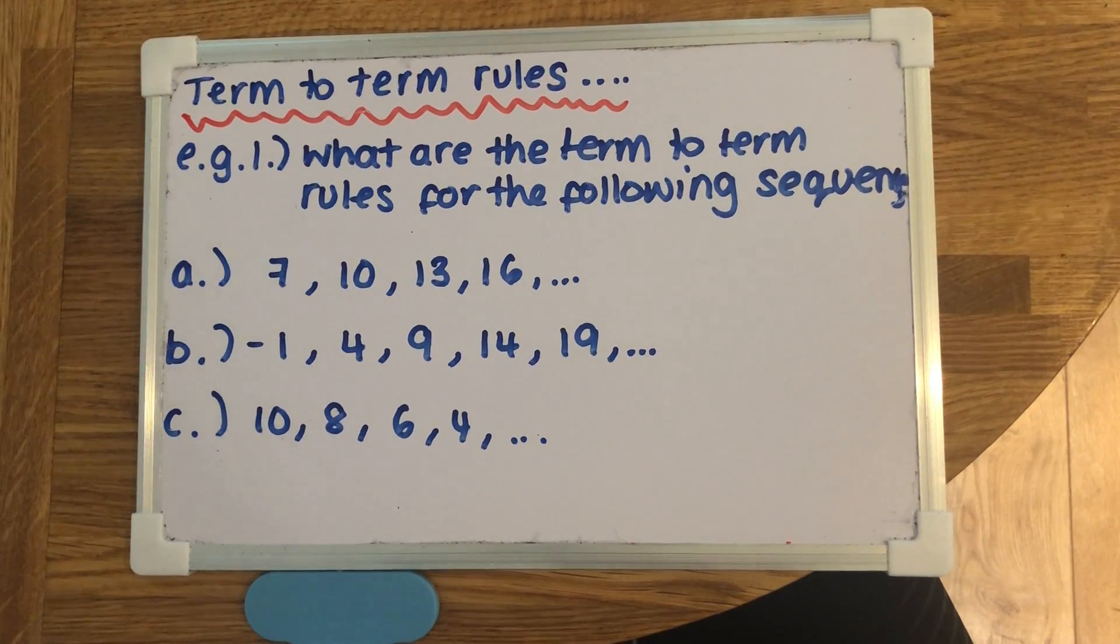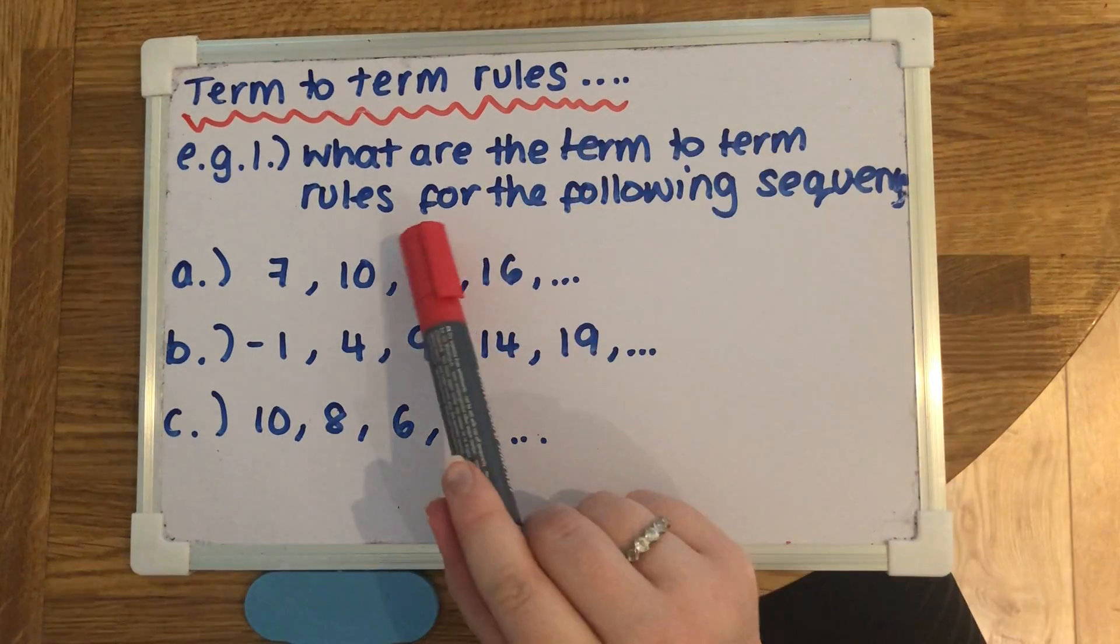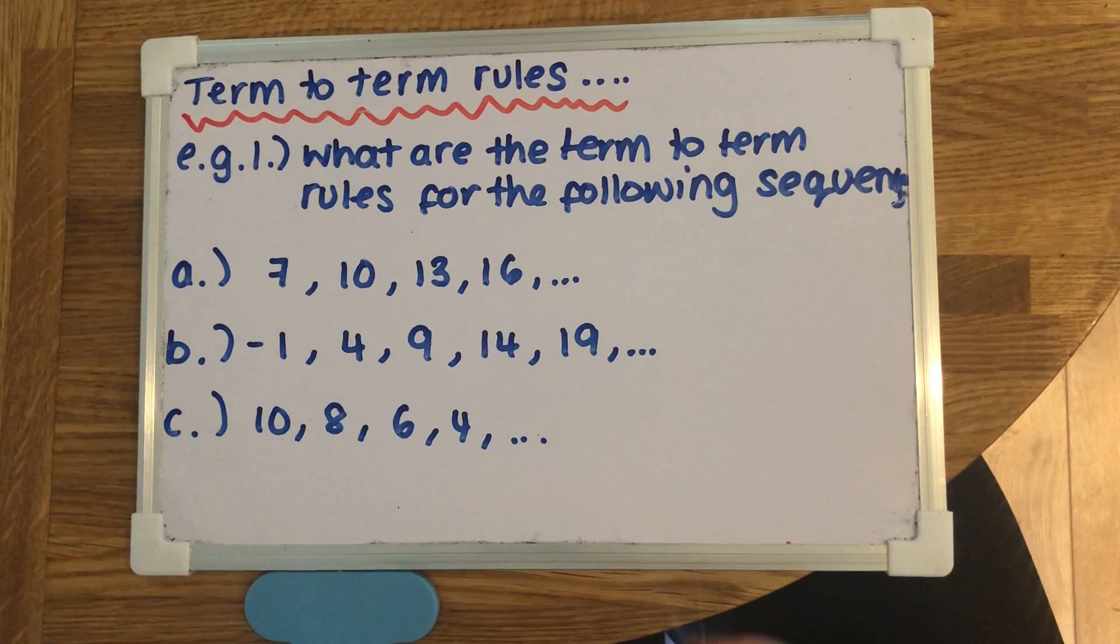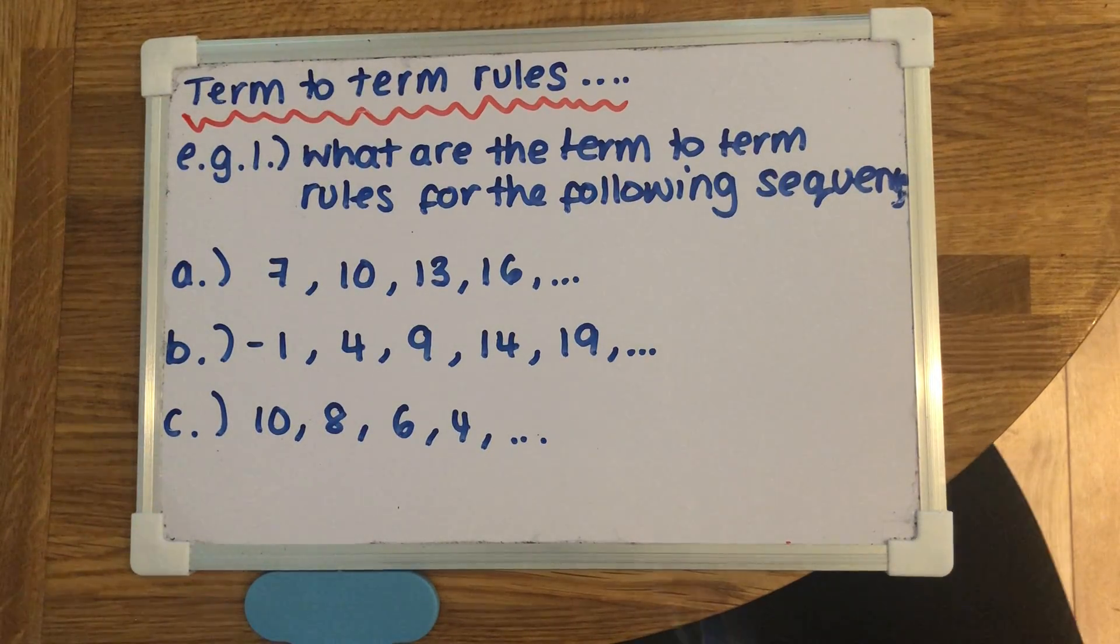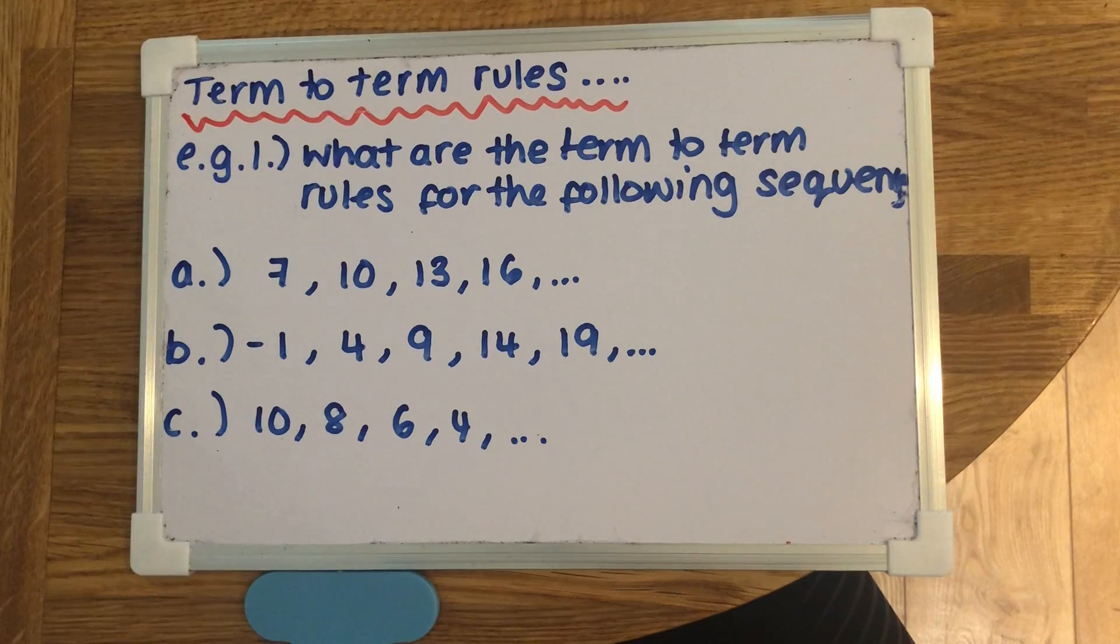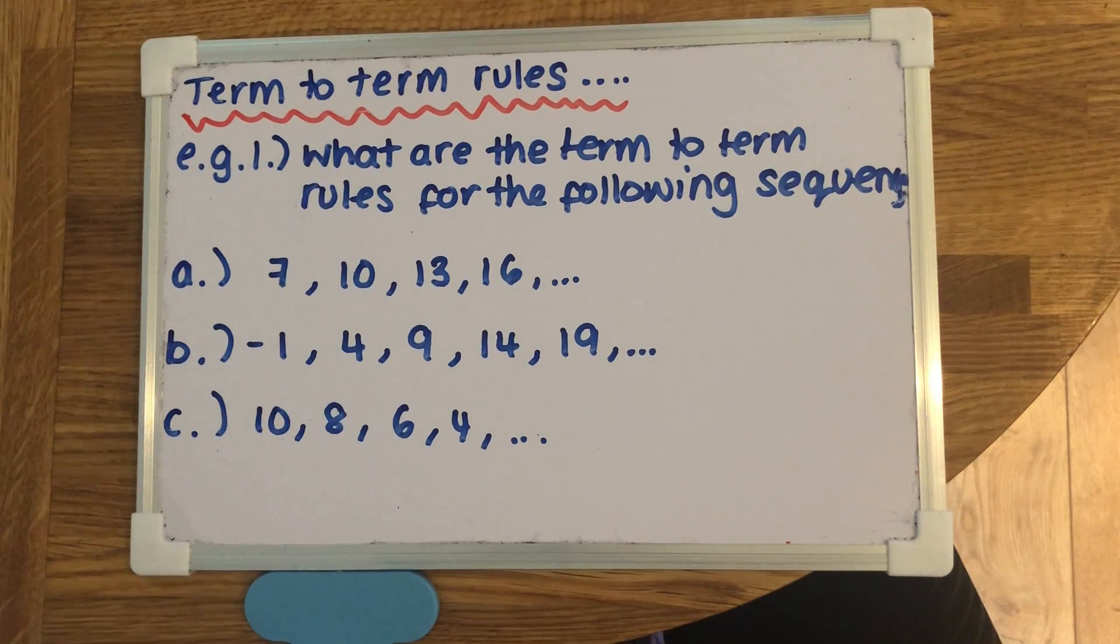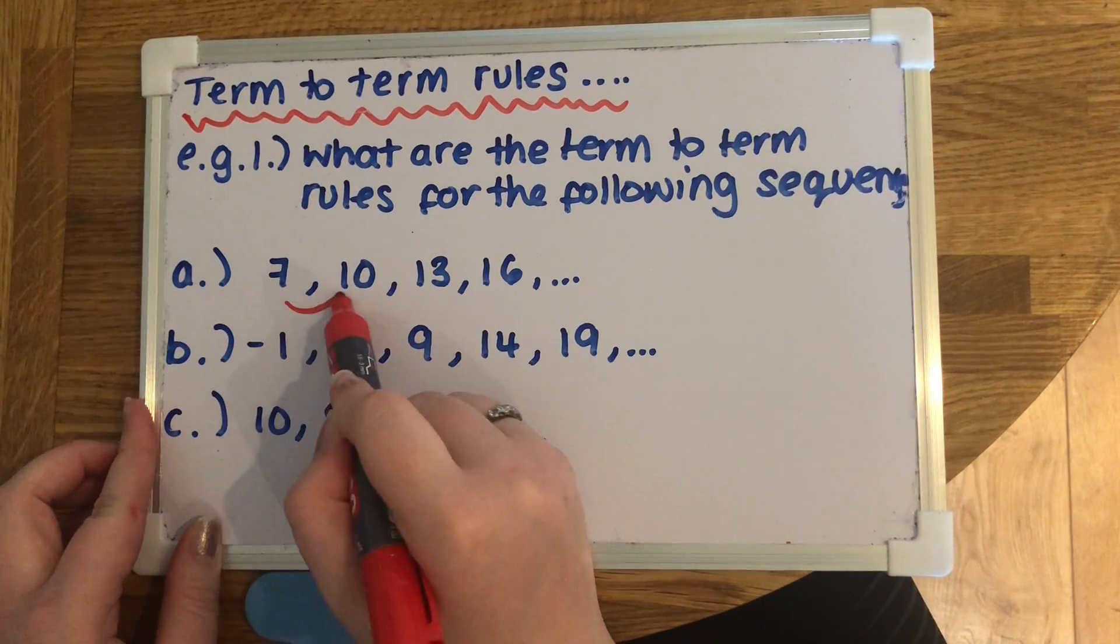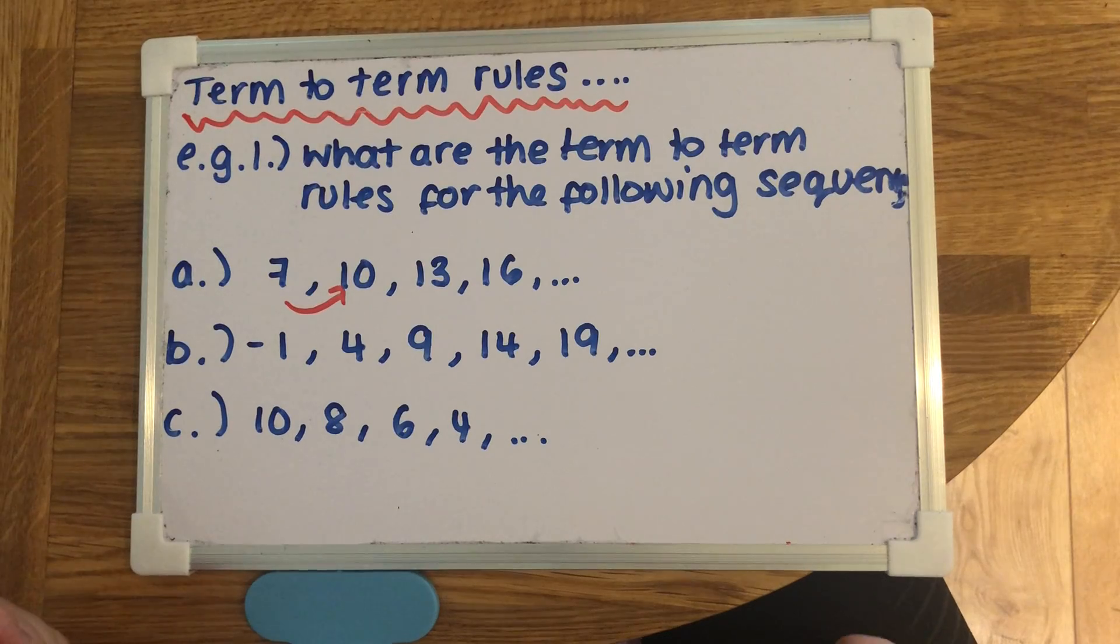We need to work out what the term to term rule is for the following sequences. If we look at the first one, we've got 7, then 10, then 13, then 16. We need to work out how we would get to the next one. If we look at the first two numbers, we've got the 7 and the 10. We think, what do we add on to get to the next one? To get from 7 to 10, we would add 3.